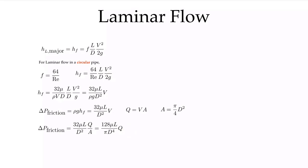That's the story for laminar flow. The important equation in terms of the friction factor is that it's 64 over the Reynolds number for laminar flow.